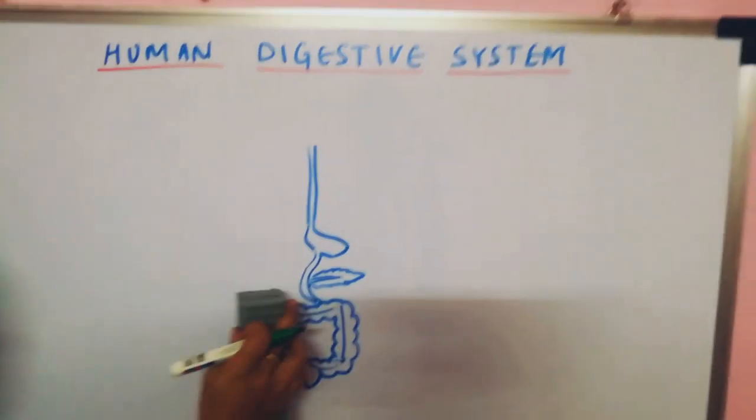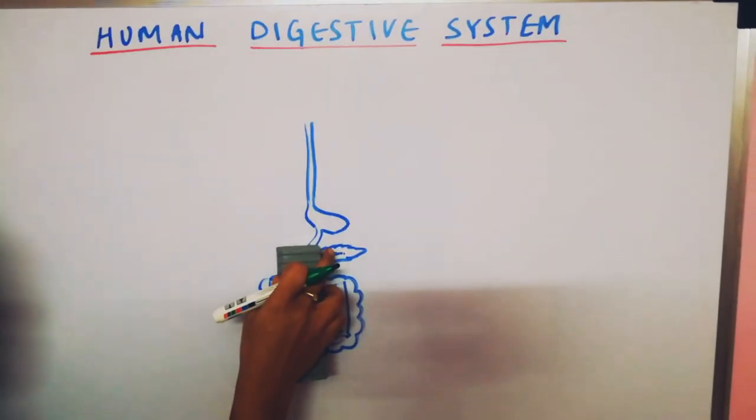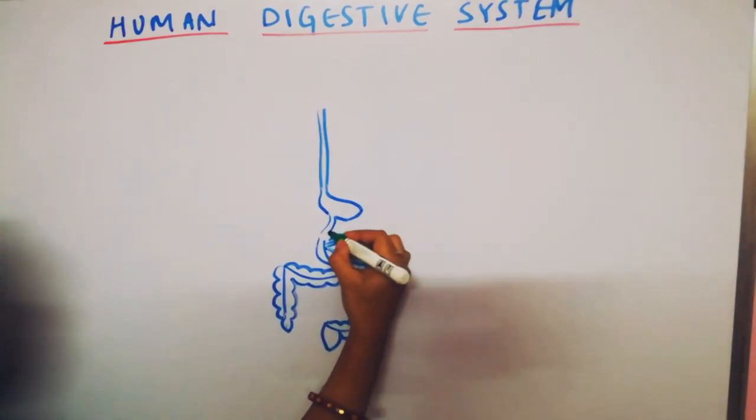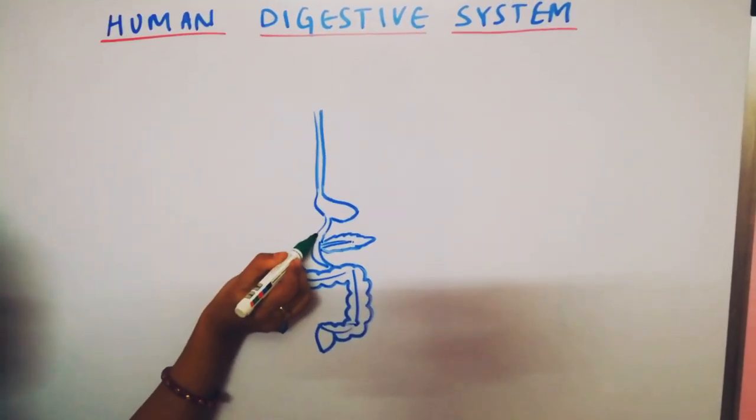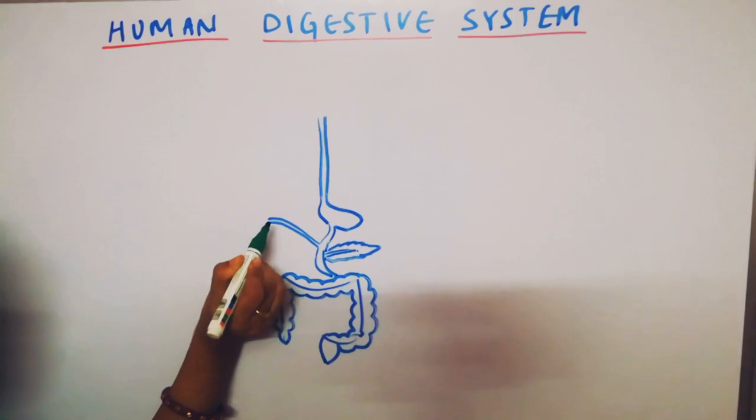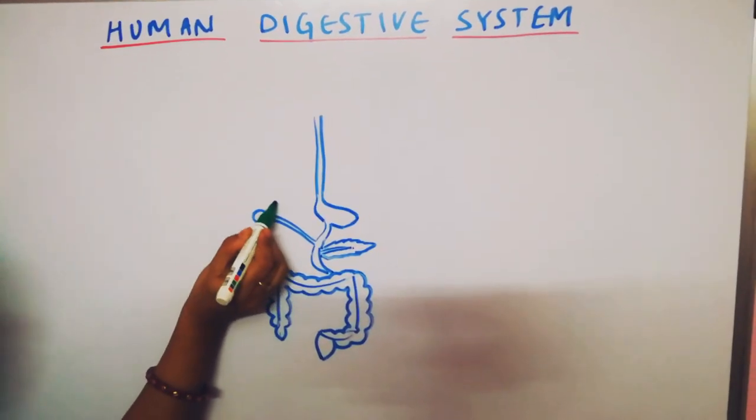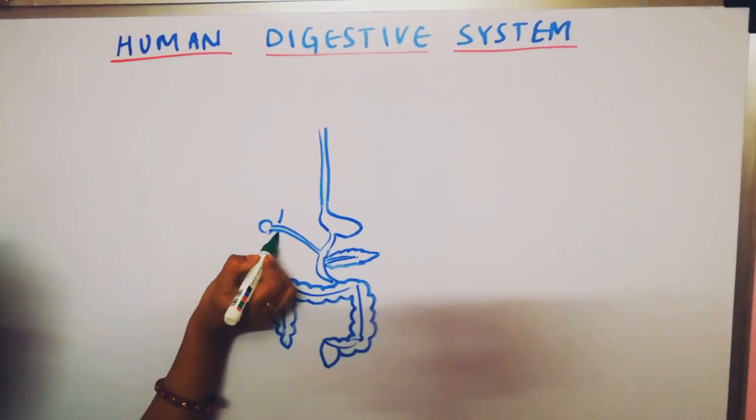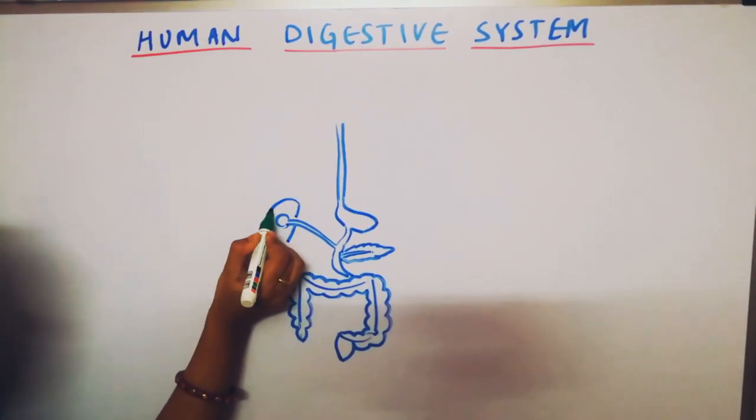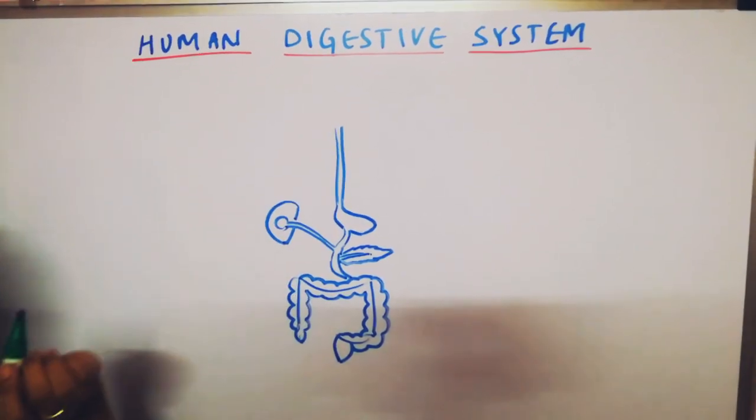Then from here, just a little up from the pancreas, you have to make another tube. And then a bulb shaped structure here, which is your gallbladder. And then make a semi-circle, which is liver.